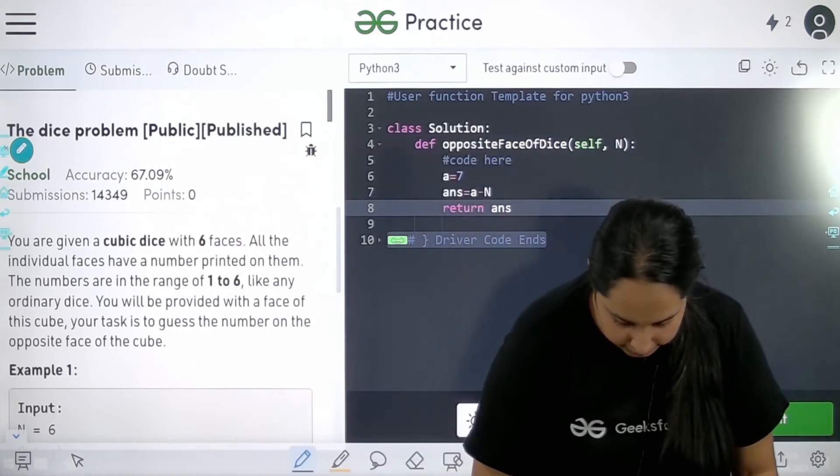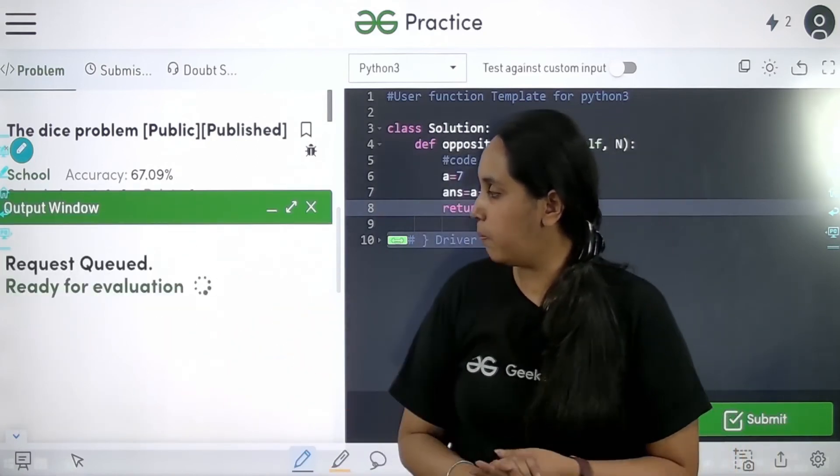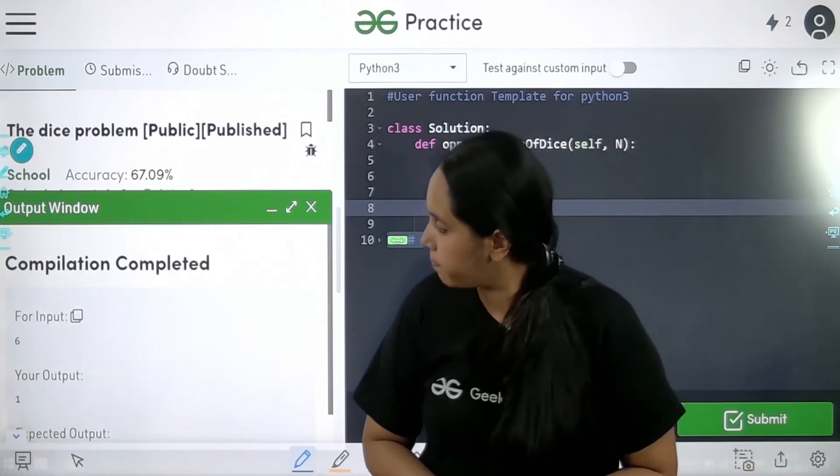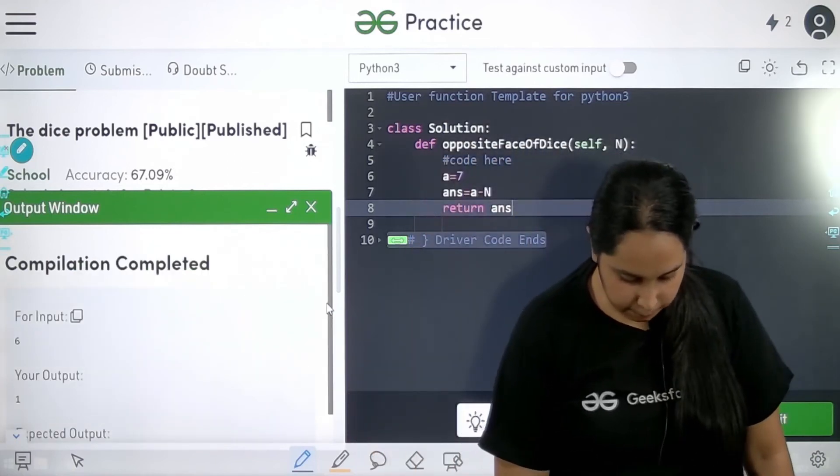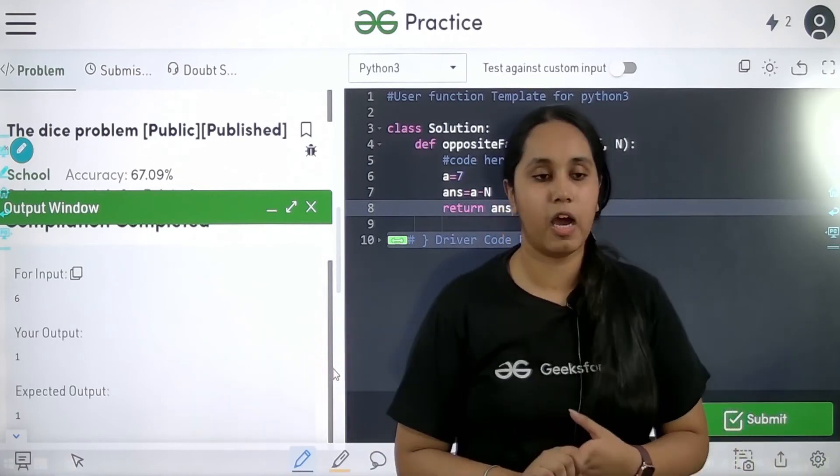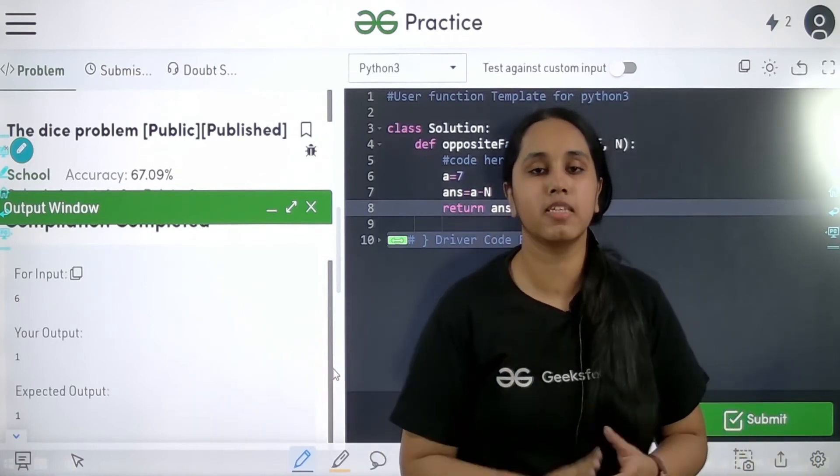So let me compile it and it is getting compiled. See, it has been compiled and my output is matching the expected output. That means I have passed the first test case.